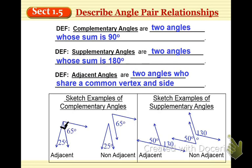Now, again, they don't have to be adjacent. They can just be two separate angles floating around that happen to add to 90 degrees.